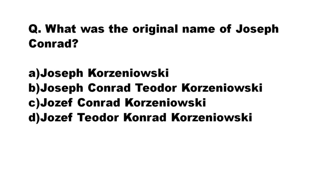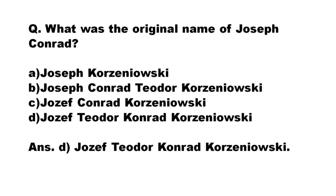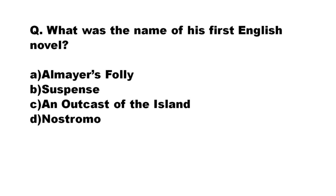Our next question is: what was the original name of Joseph Conrad? The options are: A) Joseph Korzeniowski, B) Joseph Conrad Teodor Korzeniowski, C) Joseph Conrad Korzeniowski, D) Joseph Conrad Korzeniowski. The correct answer is option B: Teodor Joseph Conrad Korzeniowski. Please do remember the name.